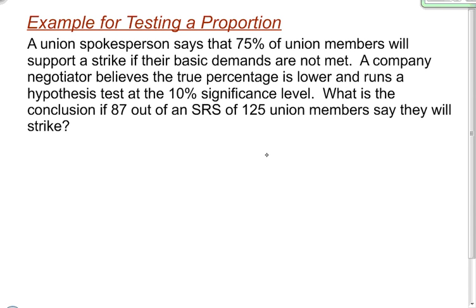In this video, I want to take you through an example of conducting a hypothesis test for a proportion. A union spokesperson says that 75% of union members will support a strike if their basic demands are not met. A company negotiator believes that the true percentage is lower and runs a hypothesis test at the 10% significance level. What is the conclusion if 87 out of a simple random sample of 125 union members say they will strike?